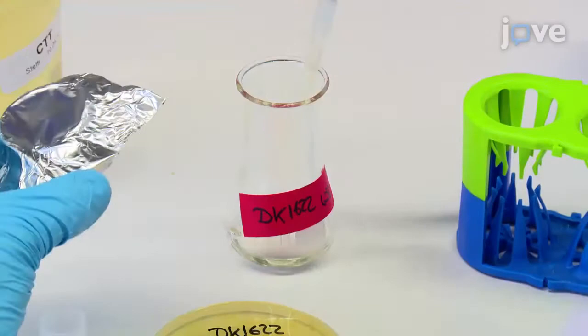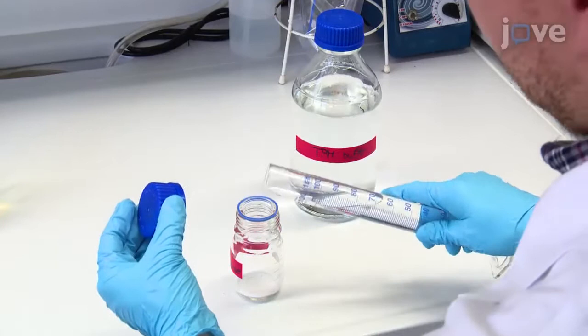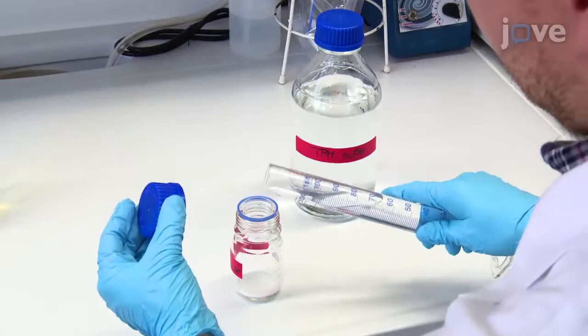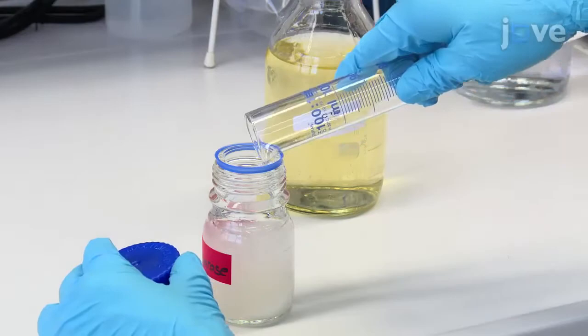Prepare 1% agarose microscopy solution containing 0.2% CTT by mixing 1 g of agarose with 80 mL of TPM buffer and 20 mL of 1% CTT medium.